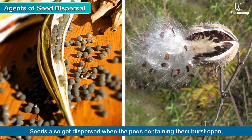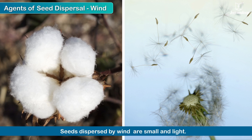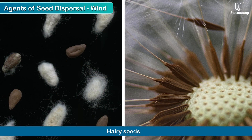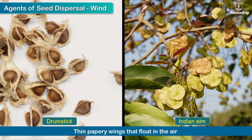In certain plants, seeds also get dispersed when the pods containing them burst open. Dispersal by wind: seeds dispersed by wind are small and light. Some are hairy like cotton seeds and dandelion. Seeds of drumstick and Indian elm have thin papery wings that float in the air.